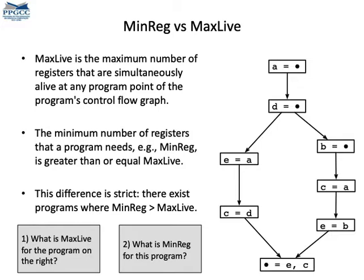We call maxLive the maximum number of variables alive at any program point. We call minreg the minimum number of registers that we need to allocate the program. There are programs in which maxLive is strictly less than minreg. On the right you can see an example — would you like to stop the video and try to figure out what maxLive is for this program, and can you calculate what minreg is for this program?